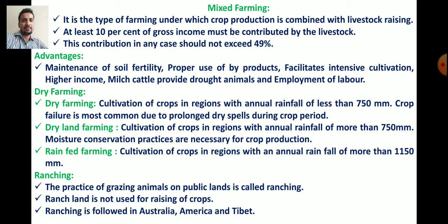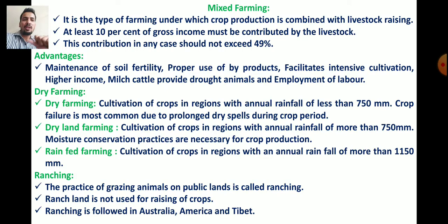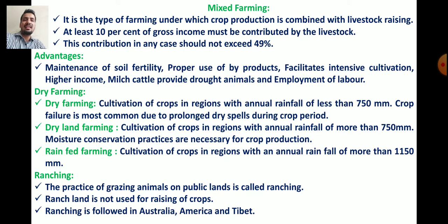Mixed farming is the type of farming in which crop production is combined with livestock rearing. At least 10% of gross income must be contributed by livestock for it to be considered mixed farming. However, this livestock contribution should not exceed 49% — if it exceeds 49%, it crosses into specialized farming.